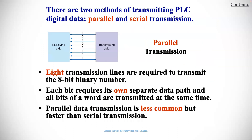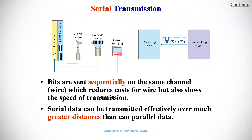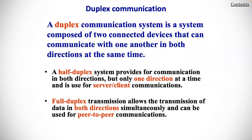There are two methods for transmitting PLC digital data: parallel or serial. The illustration here shows parallel, where all lines transmit at the same time between devices. Serial is also shown, and you can think of a universal serial bus USB as a common example of serial communication.